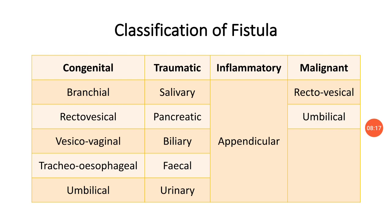The second category is traumatic fistula, due to any trauma. Examples are salivary fistula, pancreatic fistula, and biliary fistula, which occur during surgery, any procedure, or after trauma such as blunt injury or stab injury. Fecal fistula and urinary fistula are also types of traumatic fistula.